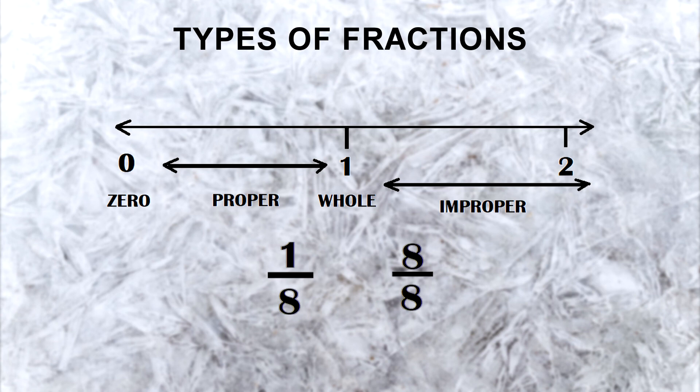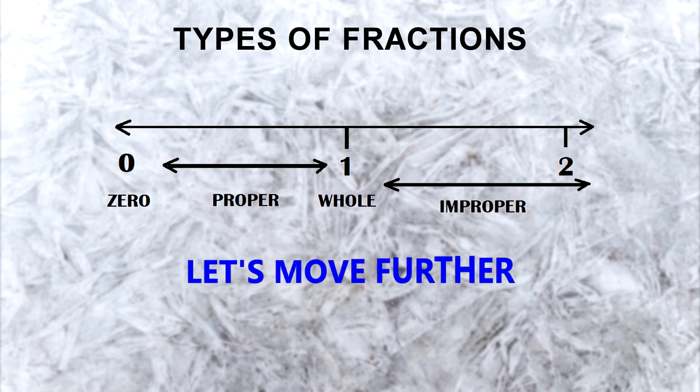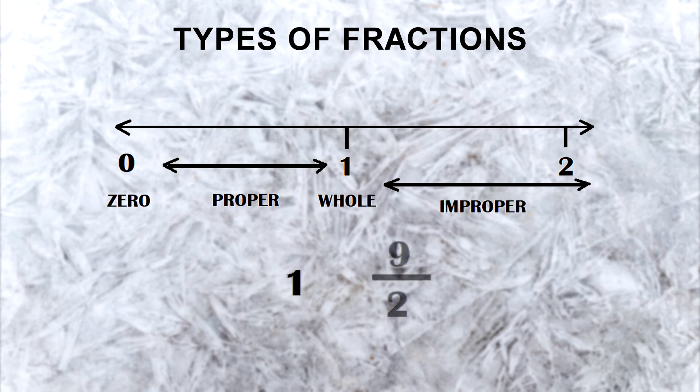Now let's see 1 over 8 and 8 over 8. 8 over 8 will give you a whole which will be 1, and a whole is always greater than a proper fraction. Let's move further and see. Once you have 1 and the other number you can take as 9 over 2, which will end up giving you 4.5, and that is an improper fraction. So 4.5 will be greater than 1. So improper fractions are greater than the other fractions like whole fractions.